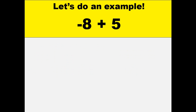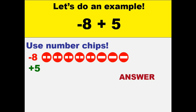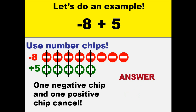Let's consider another example: negative 8 plus 5. Using number chips, we have 8 negative chips and 5 positive chips. Cancelling all the positive and negative, we will have an answer of 3 negative chips. So the final answer for this problem is negative 3.